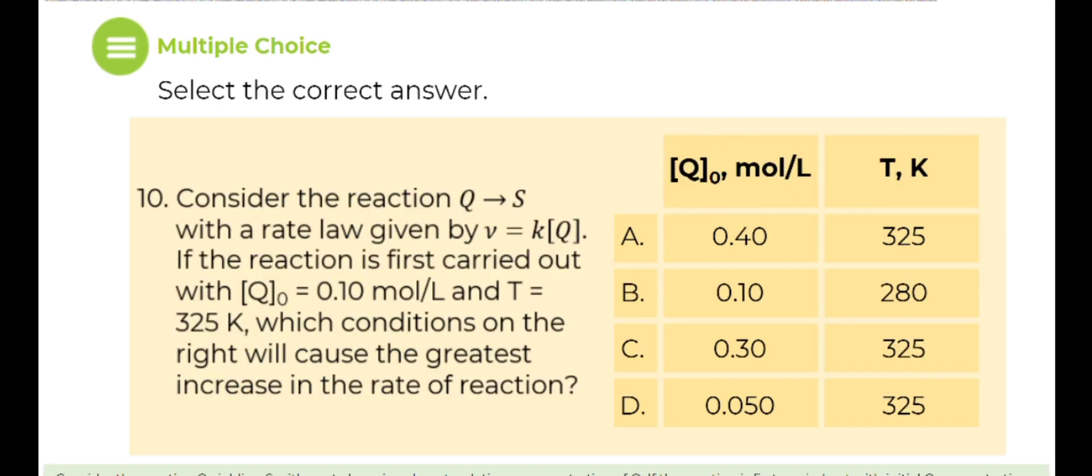Number ten. Consider the reaction Q yielding S with a rate law given by rate equals K times concentration of Q. If the reaction is first carried out with initial Q concentration equals 0.10 moles per liter and temperature equals 325 Kelvin, which conditions on the right will cause the greatest increase in the rate of reaction?